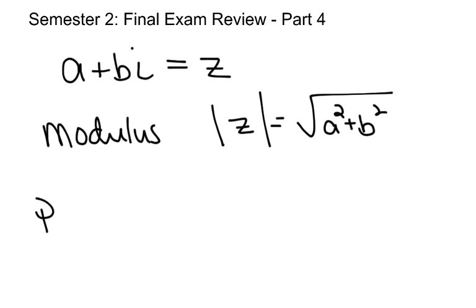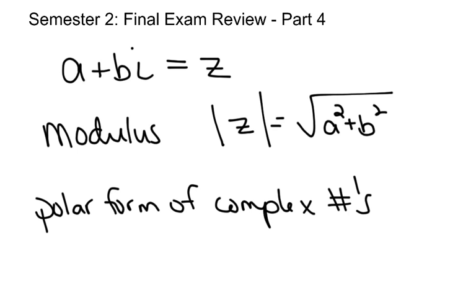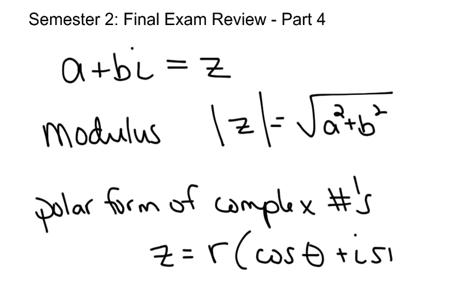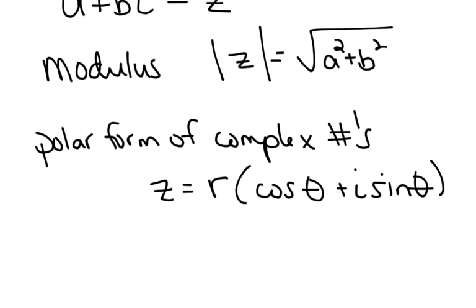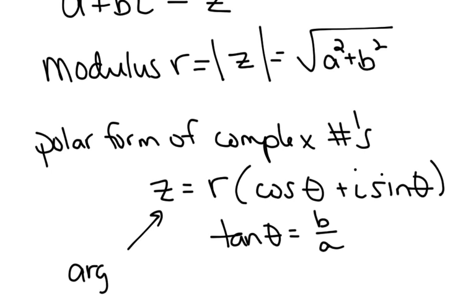We also talked about the polar form of complex numbers, and this only worked for complex numbers. The polar form of a complex number a plus bi is z equals r cosine of theta plus i sine theta, where r was just the modulus, and theta is the inverse tangent of b over a. Z has a special name — it's called the argument.